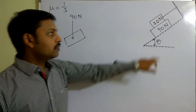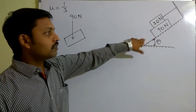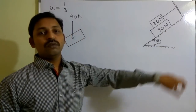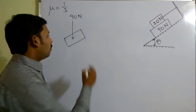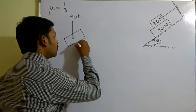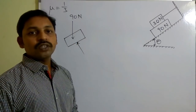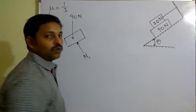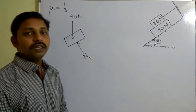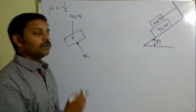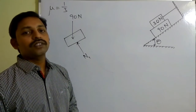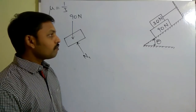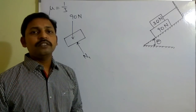First I need to represent the weight — weight acts vertically downwards, which is 90 Newtons. Next, you need to observe the restrictions. This block is able to move in certain directions but not in the downward direction, so in the opposite direction perpendicular to the surface we represent a reaction, which I am considering as N1 — the normal reaction.